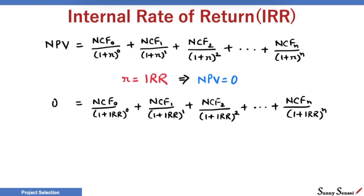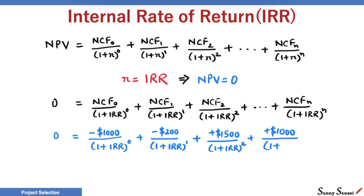Still, for the sake of completion, let's try to find the IRR for the cash flows in our previous example. NPV is 0 and the net cash flows are minus $1000 for year 0, minus $200 for year 1, plus $1500 for year 2, and plus $1000 for year 3. I used Excel to get the IRR as 39.3%.